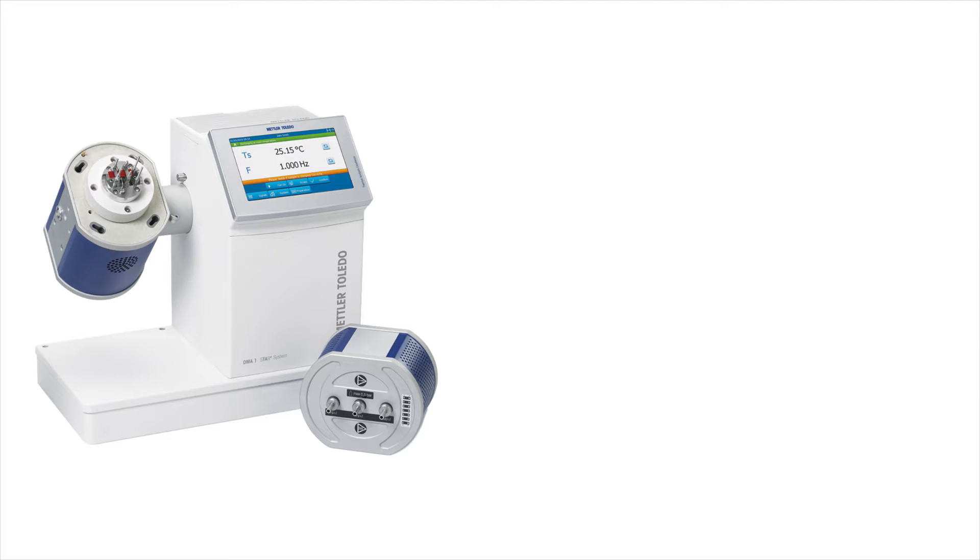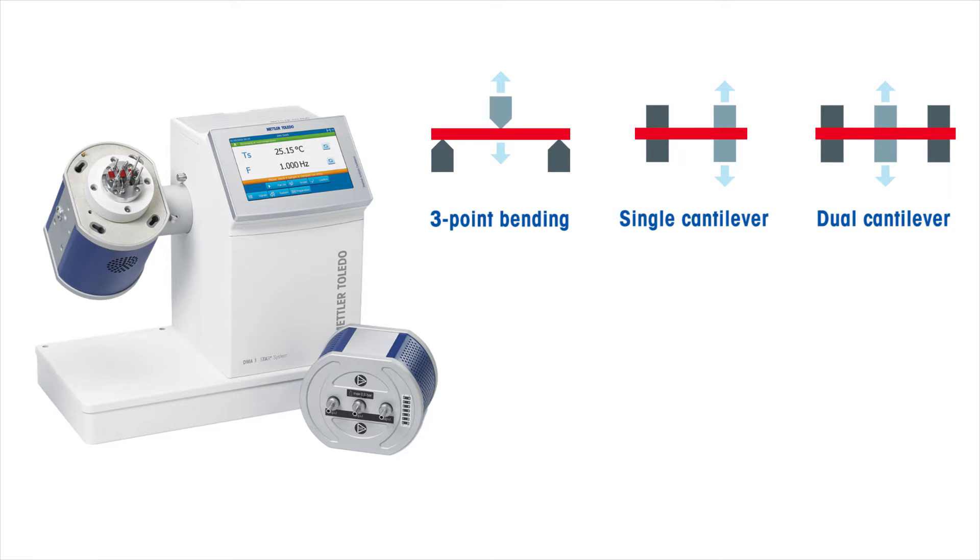To cope with different sample geometries, the DMA offers the following measurement modes: 3-point bending, single and dual cantilever, tension, compression, and shear.